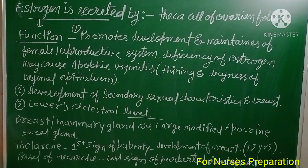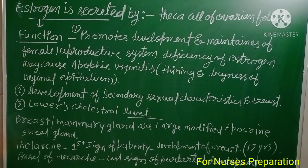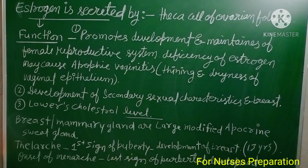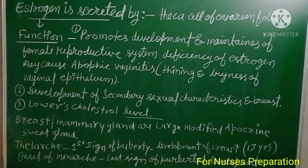Thelarche is the first sign of puberty and means development of the breast. It normally occurs at 13 years of age in females. The onset of menarche — meaning the start of menstruation or first menstruation — is the last sign of pubertal development.